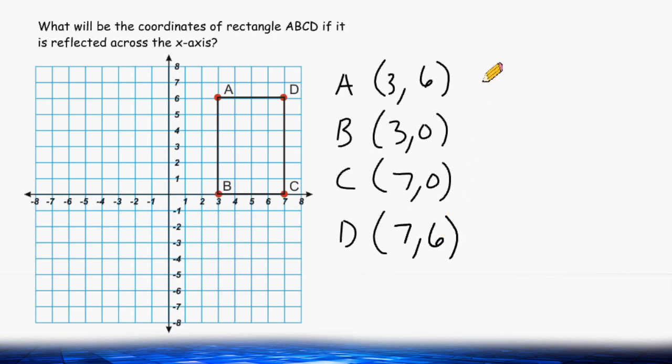Now we want to keep all of the x values the same. So for point A, this 3 is going to be the same, and we make all of the y values opposite. So the opposite of positive 6 is negative 6.